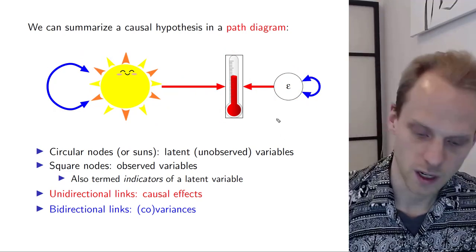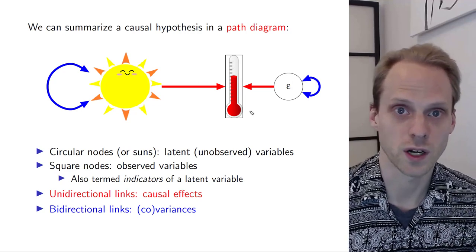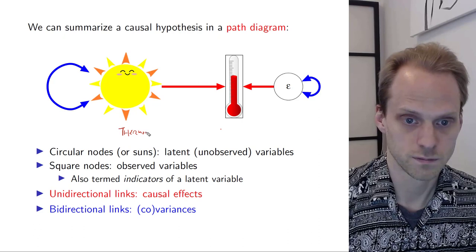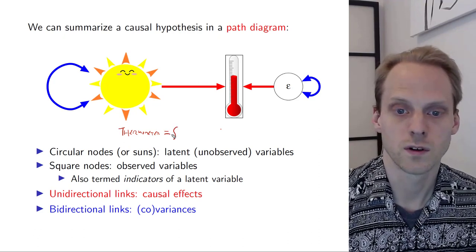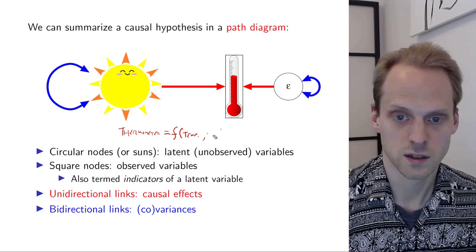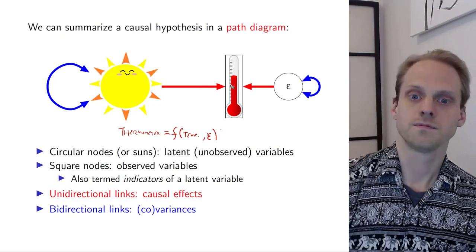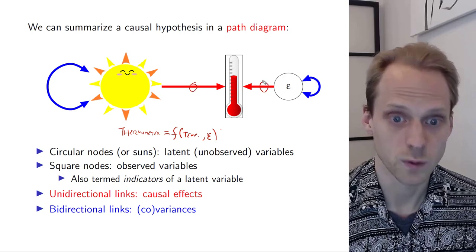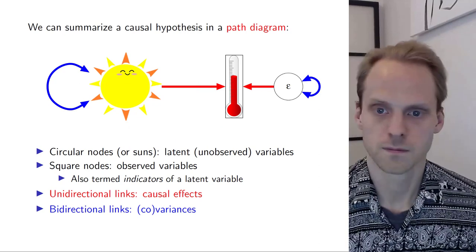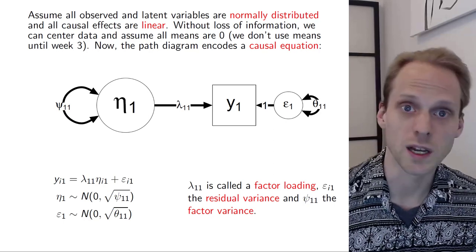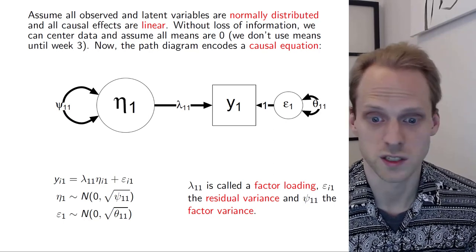The nice thing about this path diagram is that we can actually read off our causal hypothesis here. The thermometer is a function of the true temperature and the error epsilon. We're going to use only a linear expression for these functions, where all these arrows indicate regression weights. So let's get rid of the suns and other pictures and instead use Greek letters, because in structural equation modeling or confirmatory factor analysis everybody really loves Greek letters.